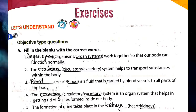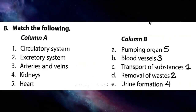Fifth blank: the formation of urine takes place in the blank — heart or kidneys. Correct answer is kidneys. Kidneys जो है blood को purify करती हैं और urine form करती हैं।